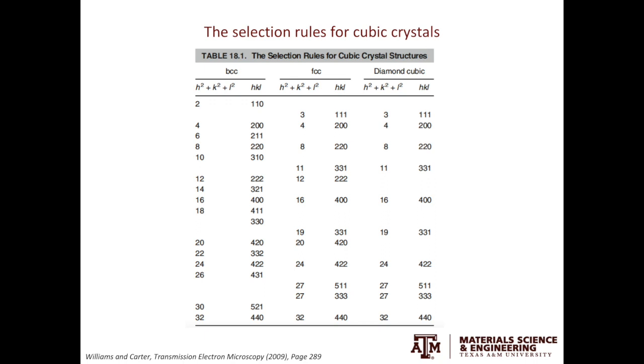For example, in BCC, we'll have diffraction spots at positions of square root 2, square root 4, square root 6, etc.